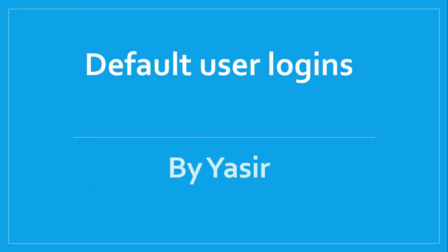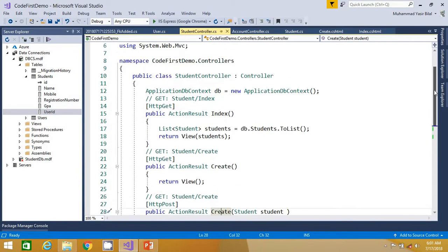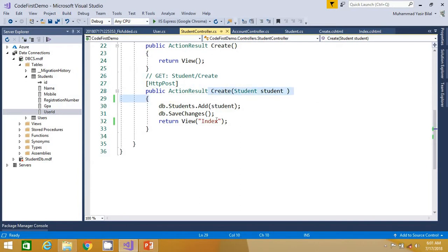Hello guys, this is part 21 of the ASP.NET MVC series. I am Yasir and today we are going to do something interesting — we want to create default user logins. Whenever we create a student object in our database, we want to create an account for that student as well. Let's flip to Visual Studio and understand what we want to do. Whenever a student is created, it happens in the POST action method of the student controller's Create action method.